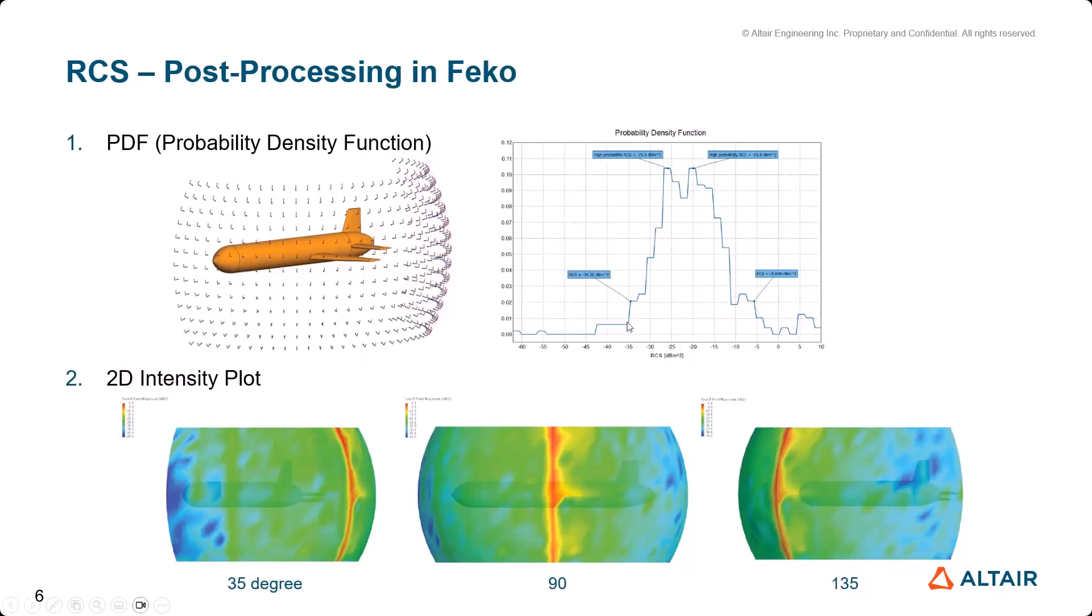The second post-processing method is intensity plot. Intensity plot clearly helps you check which angle of the target has the biggest RCS.